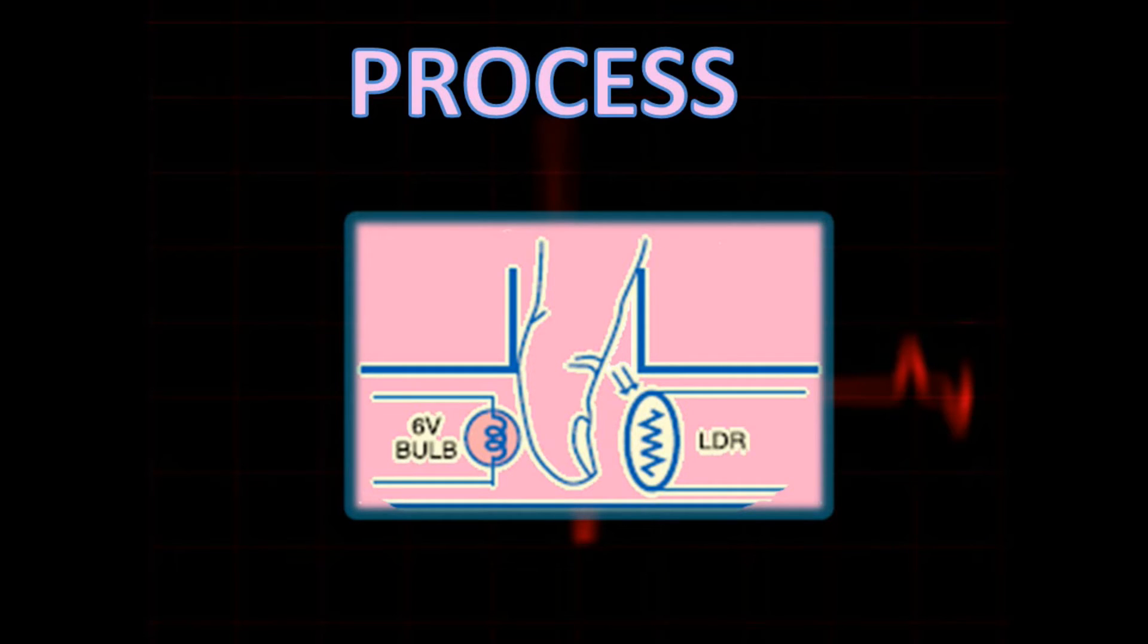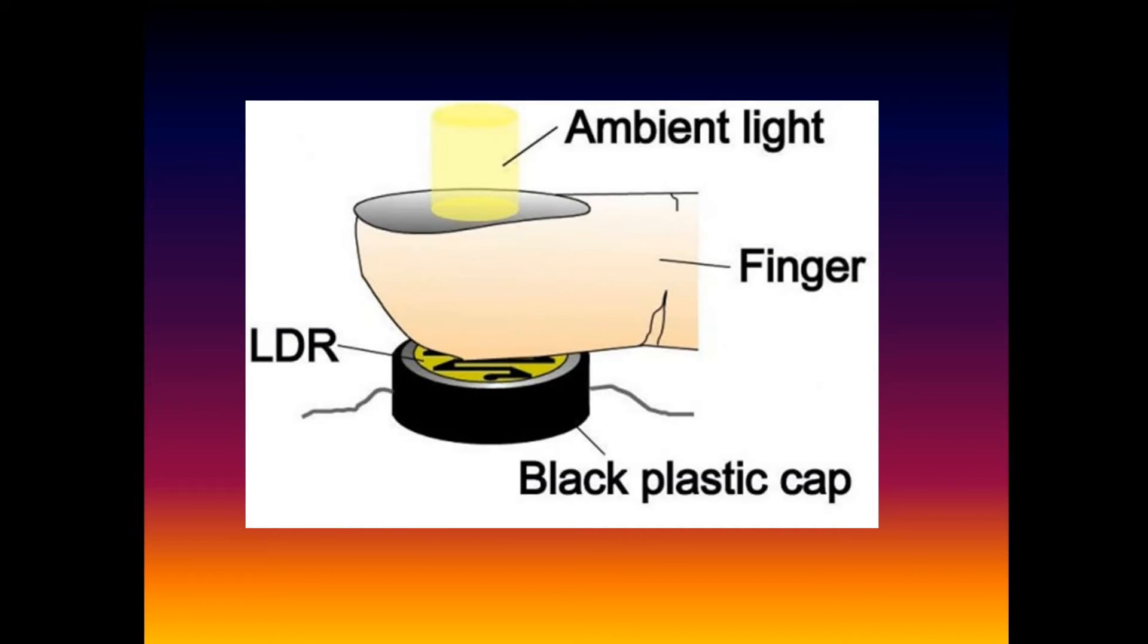Now when we place the finger between the LDR and the bulb, the light will reach the LDR through the finger. To make it more clear, let us look into the next image. Here the finger is placed such that the LDR can sense the light coming through the finger. When the heart will pump the blood, the blood will flow into the finger. And as a result, the intensity of light reaching the LDR through the finger will decrease. This will change the resistance of LDR. This change in the resistance can be used to calculate the heart rate.